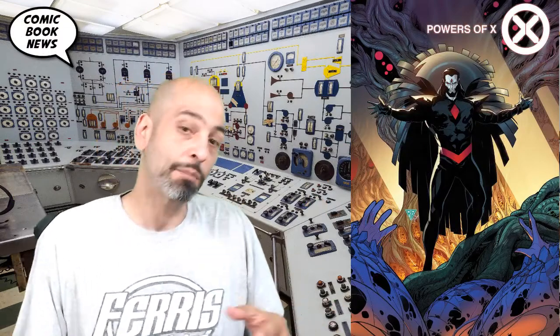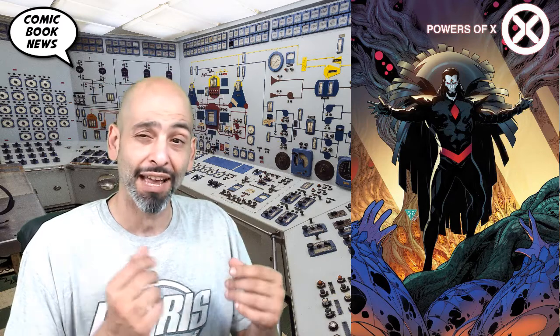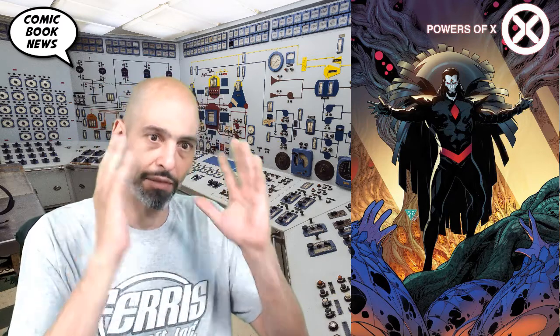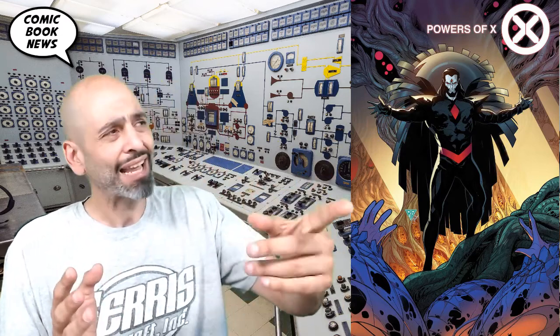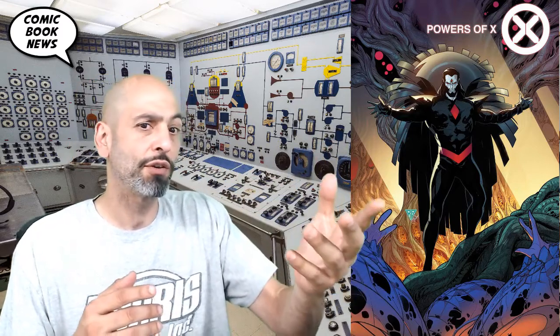Today we're going to talk about Powers of X number 5. Powers of X, as you may recall, is the companion series to House of X. House of X is set in the current timeline and continuity of the X-Men. And Powers of X goes back and forth in time and looks at various past, present, and futures of this and other timelines. I know I can get a little bit confused with this stuff, but talking about this with you guys and piecing together all the little clues that Hickman's been dropping has been a lot of fun. So let's cut the jawbone in and get straight into the Million Dollar Comics Cam.